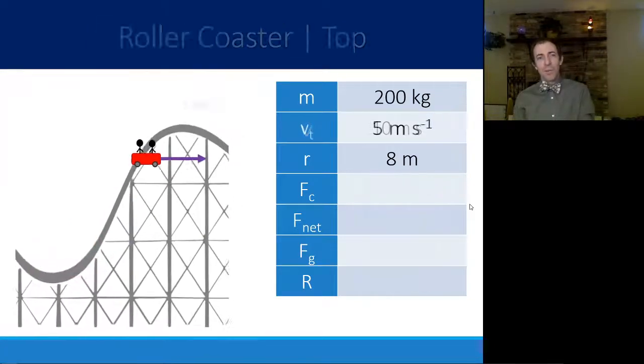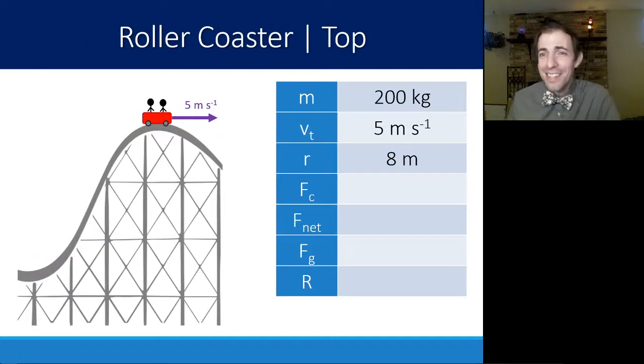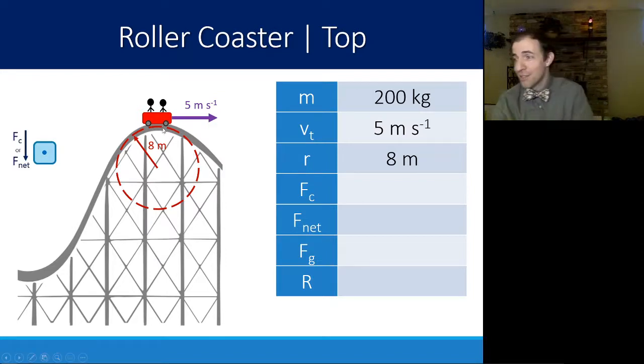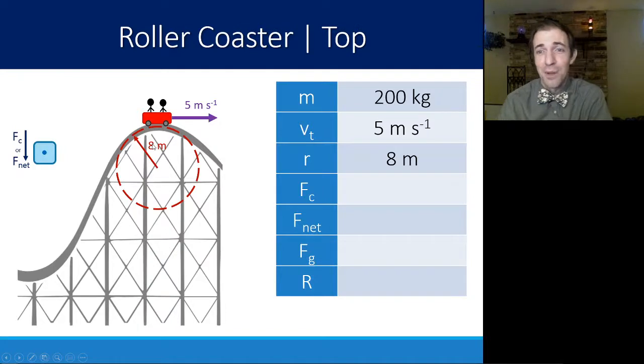Now let's look to see what would happen if this roller coaster was moving at the top. At the top, we're usually moving a little slower. So I've decreased the velocity to 5 meters per second. But just as before, we can approximate a circle. It's at the top of that circle. We'll still call it a radius of 8. Which means that my centripetal force must be pointing downward because the center of the circle is downward now because we're at the top.